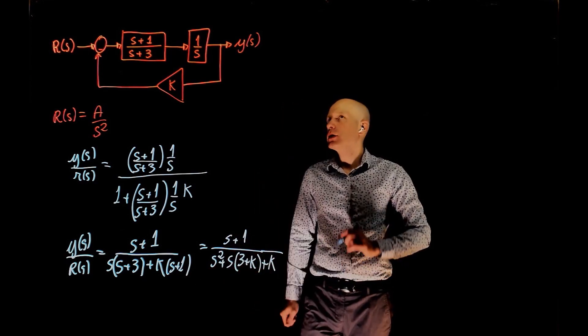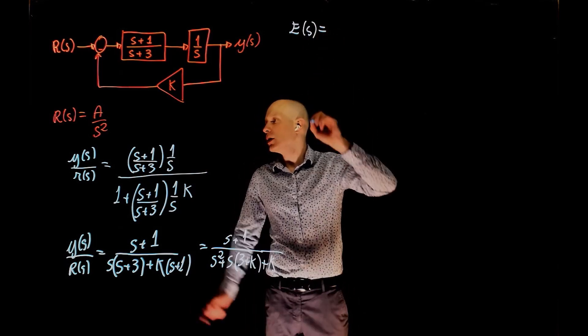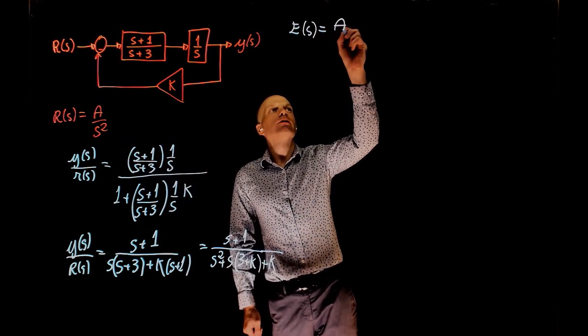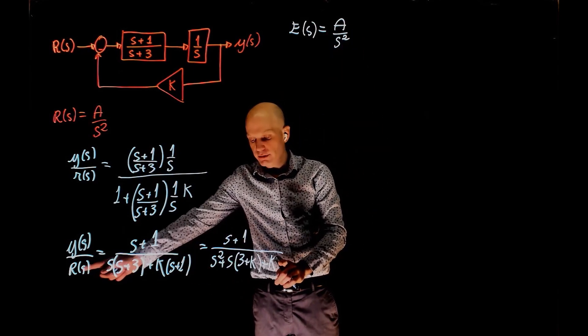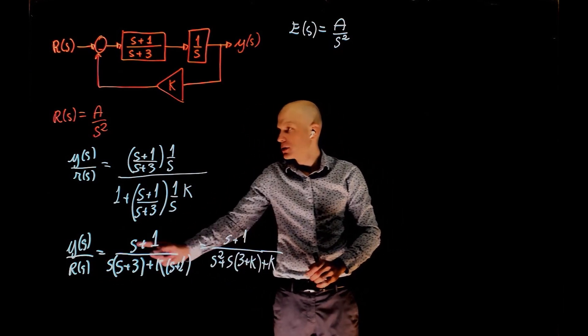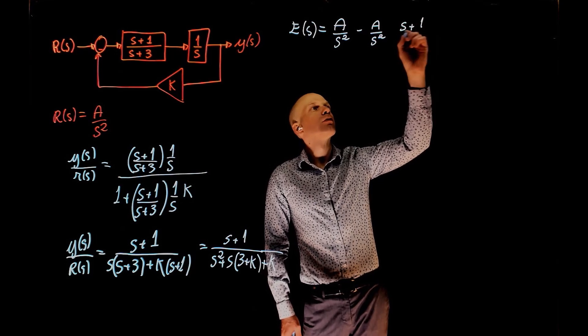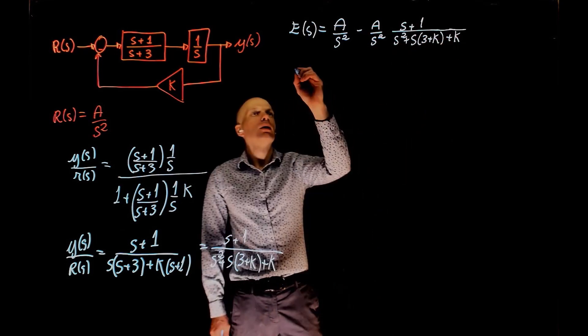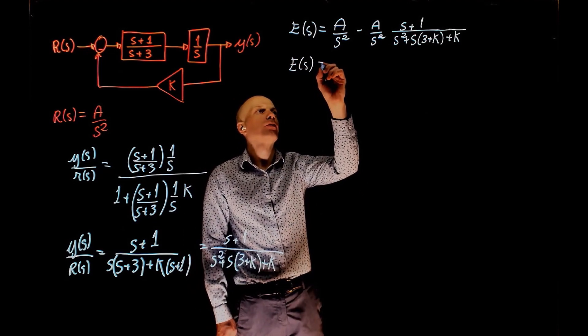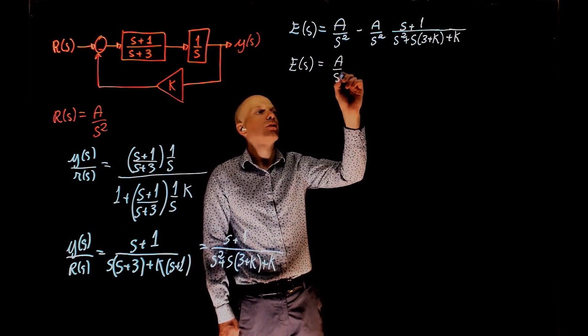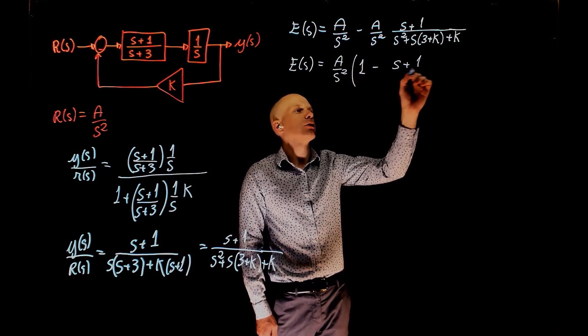Now let's define the error function. The error is the input minus the output. The input is a over s squared, and the output is the transfer function times the input r of s. So this function times a over s squared. Now we can factor a of s.